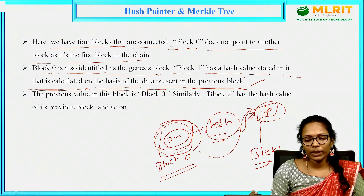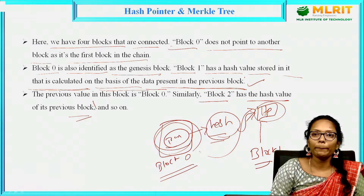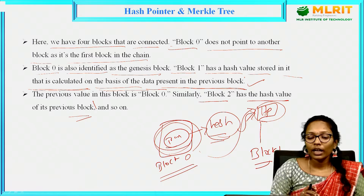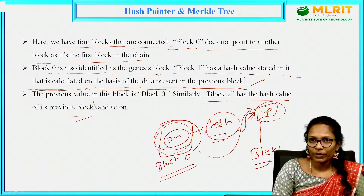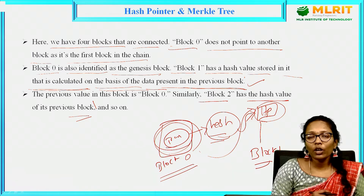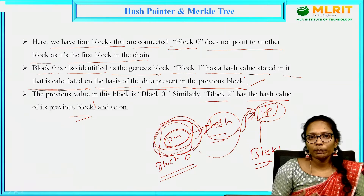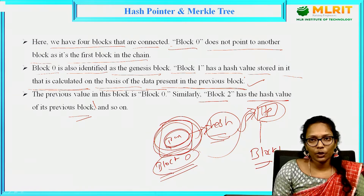The same process will be repeated — block 2 also contains the hash value of the previous block that is block 1, and so on. In that way all the blocks will be connected together, and we know the hash value cannot be changed. If any single change is there in the data, automatically the hash value will be reflected. So if any attacker wants to change the transaction data in the blockchain, it will automatically affect the hash value, and the owner can easily identify that there has been a hack. Using this feature we can secure our blockchain.